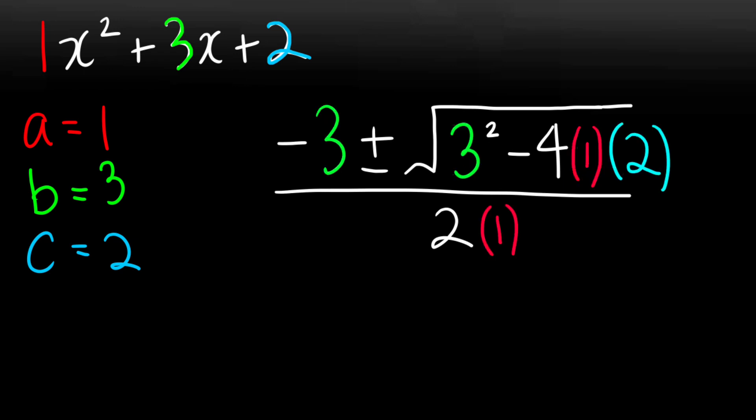We can then plug in these values and calculate them to get this new expression. Since the discriminant is greater than 0, we can safely infer that there are two x-intercepts.